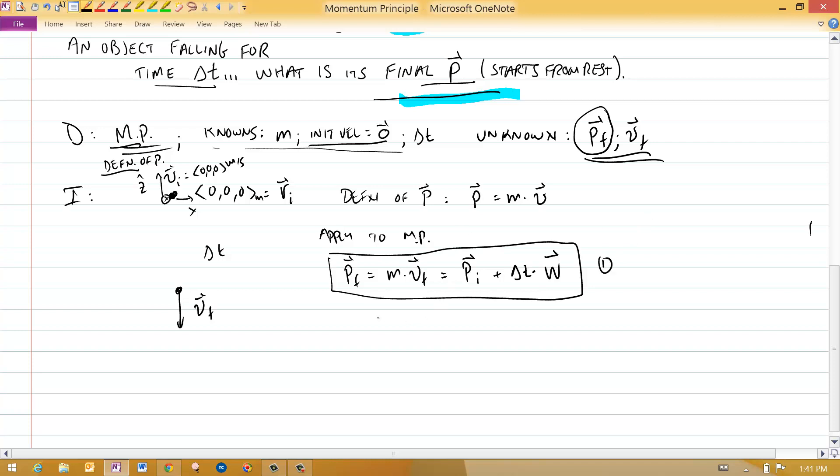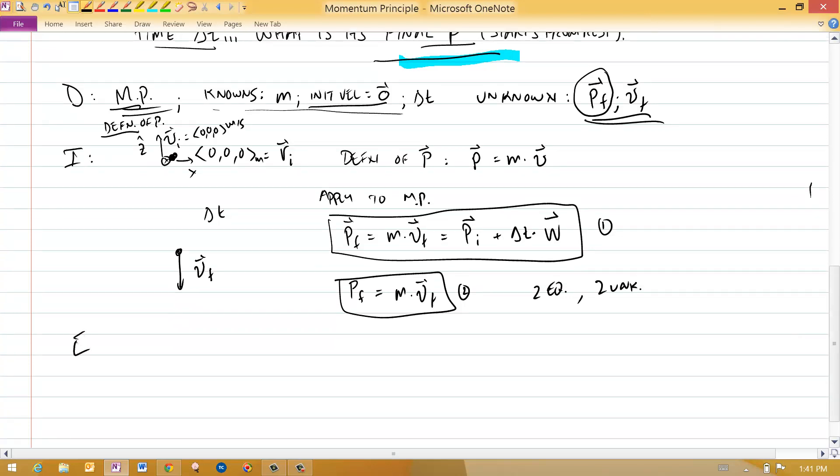Number one, the definition of momentum here, let's say that P final is equal to M times V final. That's equation number two. So I have two equations, two unknowns. I'm going to be able to solve this for the final momentum. Two equations, two unknowns. So now I can go on to the next step of the problem, execution. Actually, I've got equation number two built into equation number one there. I get directly that P final is equal to P initial, which is zero, plus delta T times the weight. And so there's my answer.